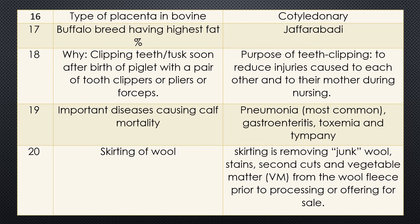Question nineteen: Important diseases causing calf mortality. As a farm manager, one must know these things. Pneumonia is the most common disease, then next gastroenteritis and diarrhea, then next toxemia — especially colisepticemia. Due to nutritional derangement and gastroenteritis, there may be tympany or bloat. A farm manager must know and prevent these diseases.